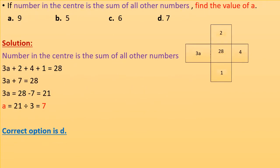If the number in the center is the sum of all other numbers, find the value of A. The number in the center is 28. So 3A + 2 + 4 + 1 = 28, giving 3A + 7 = 28, then 3A = 21, so A = 7. Correct option is D.